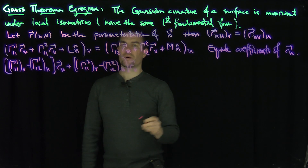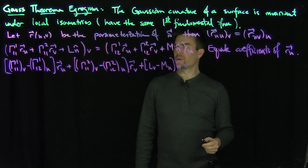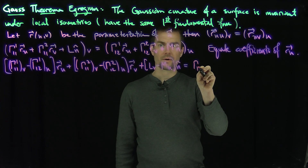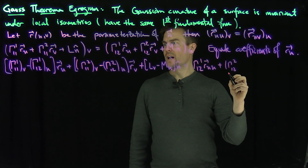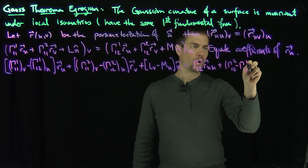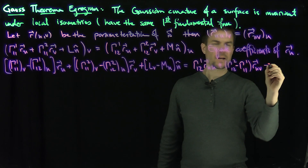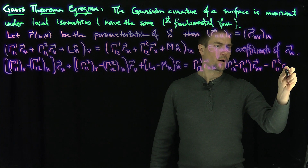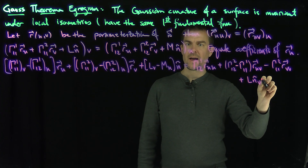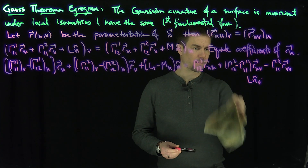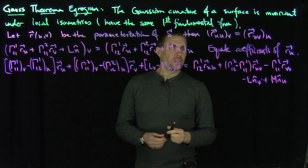We have L_V minus M_U for the N̂ terms. On the right side, we throw all second-derivative terms: Γ¹₂₁ R_UU, plus (Γ¹₂₂ − Γ¹₁₁) R_UV, minus Γ¹₁₂ R_VV terms. Then the N̂ terms give plus L N_V — actually minus — and plus M N_U.